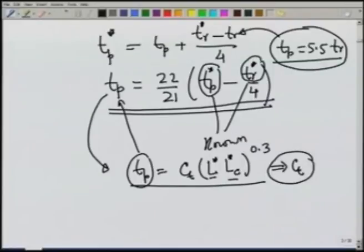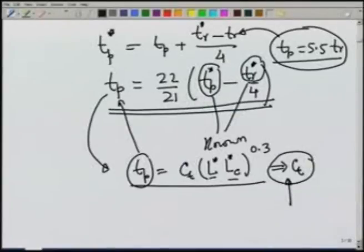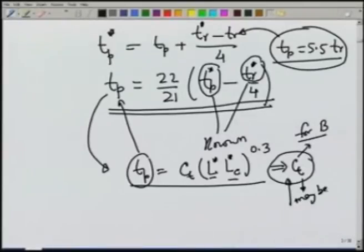Using this Ct obtained from catchment B, since we have assumed both catchments A and B are similar, the same value of Ct can be applied to catchment A. So Ct derived from the nearby gauged basin B may be used for the ungauged basin A. This takes care of one of the coefficients.